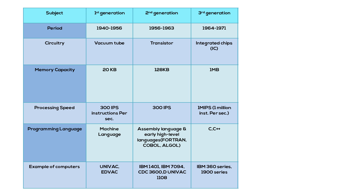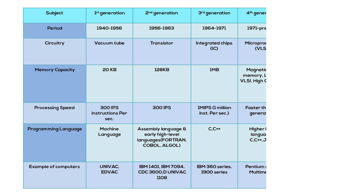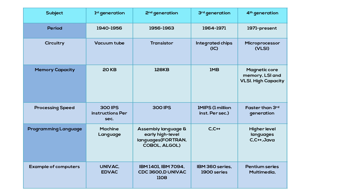In the fourth generation, Intel developed the Intel 4004 chip in 1971, which positioned all computer components onto a single chip. In 1981, IBM introduced its first computer for the home user. In 1989, Apple introduced the Macintosh and the microprocessor industry bloomed. The increased power of small computers meant they could be linked, creating networks, which ultimately led to the development and rapid evolution of the internet.